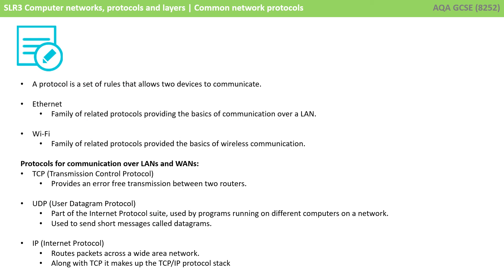So, let's recap what we've gone over. A protocol is a set of rules that allows two devices to communicate. Ethernet is a family of related protocols that provides the basics for communications over a LAN, whereas Wi-Fi is a family of related protocols providing the basics for wireless communication. There are three protocols to know for communication over LANs and WANs: TCP, which provides error-free transmission between two routers; UDP, used to send short messages called datagrams; and IP, which routes packets across a wide area network.